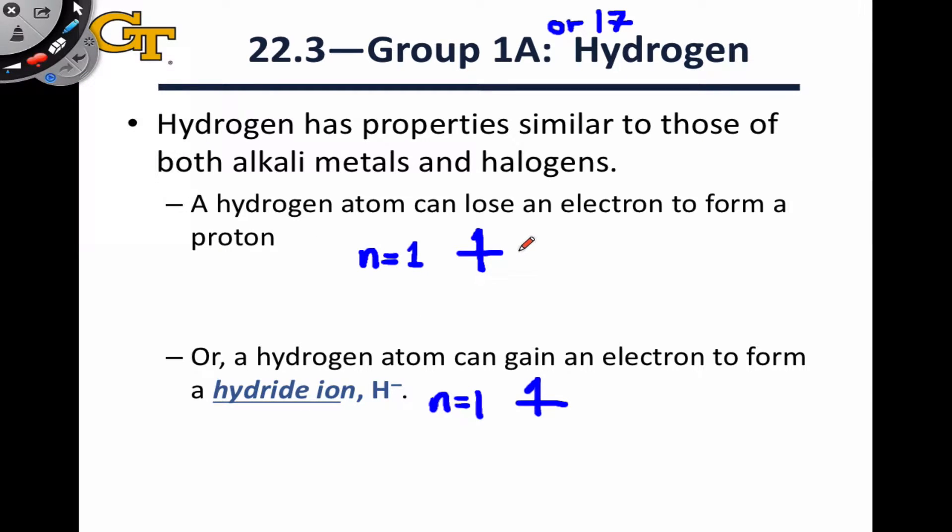If, for example, that one electron is lost, then we end up with an empty n equals 1 level, and the chemical species here is simply a proton, H+.